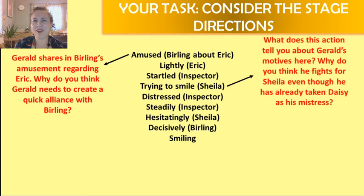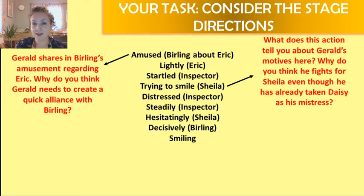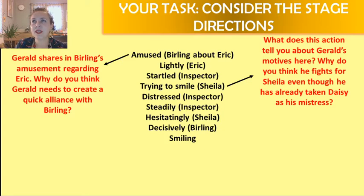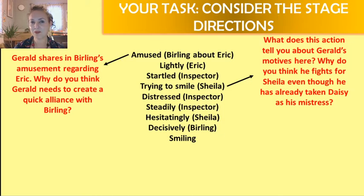'Trying to smile' — love this bit. What does this action tell you about Gerald's motives? Why do you think he fights for Sheila, even though we know that he took Daisy as his mistress? This is at the point where Sheila has said 'you fool, he knows,' and she's realised that the inspector knows everything. But Gerald is still trying to smile his way out of trouble — he still thinks he can have Sheila. Is it because of his social class, his social standing, his status? Is it because in 1912 women expected their boyfriends to have affairs before they got married?